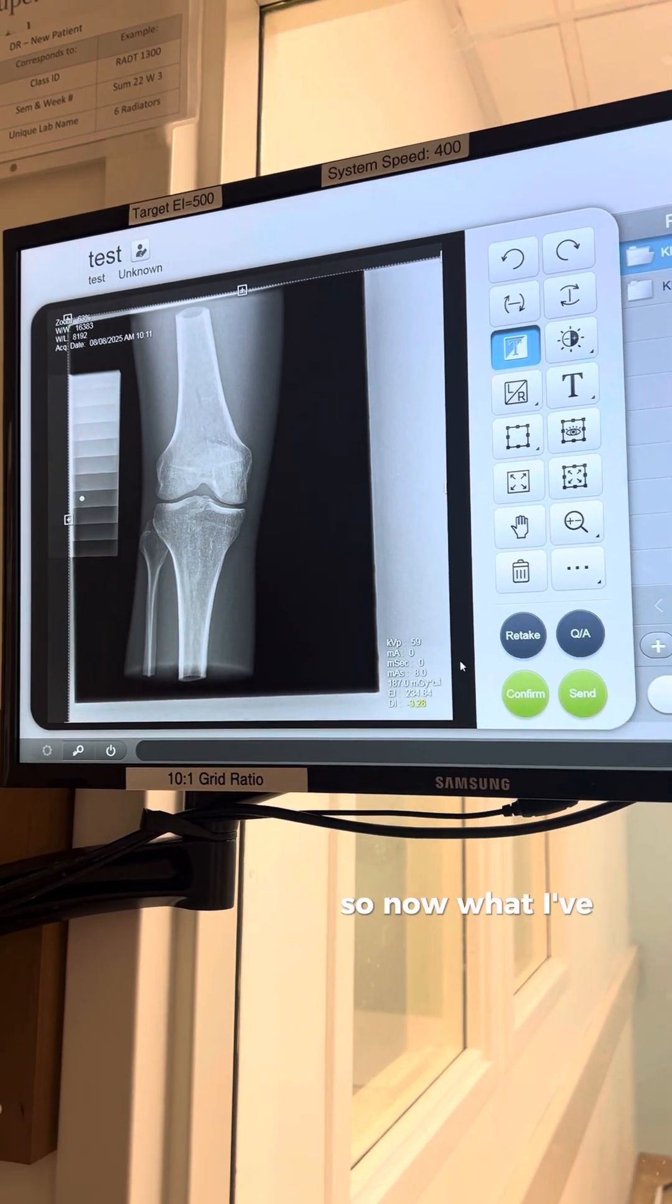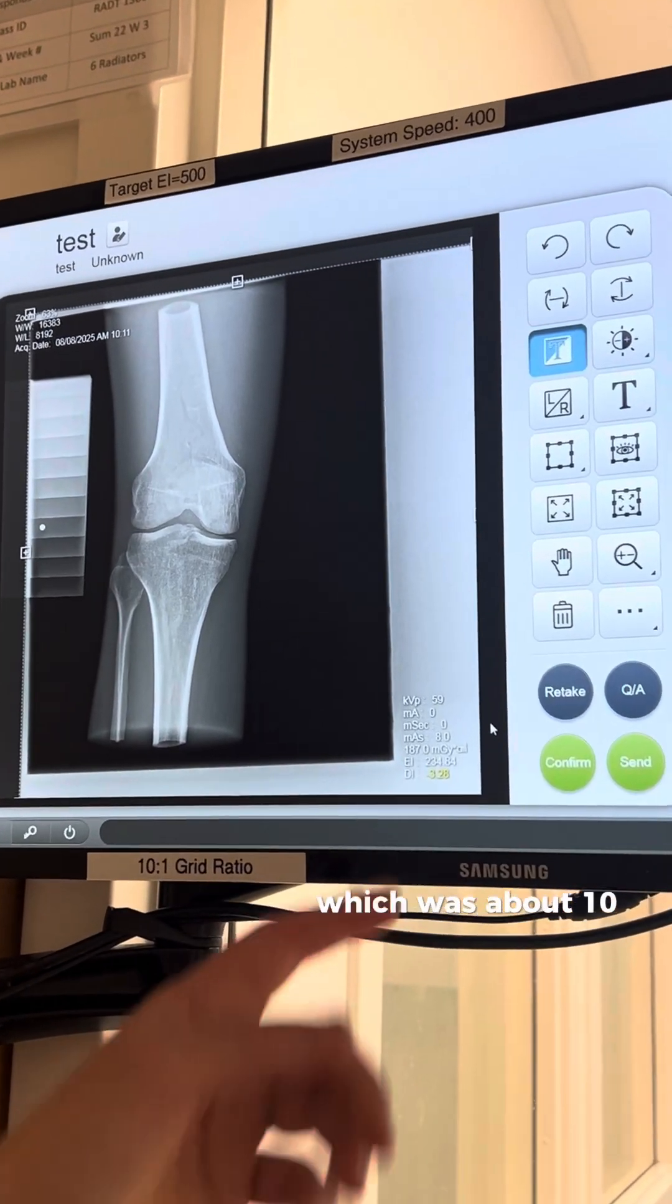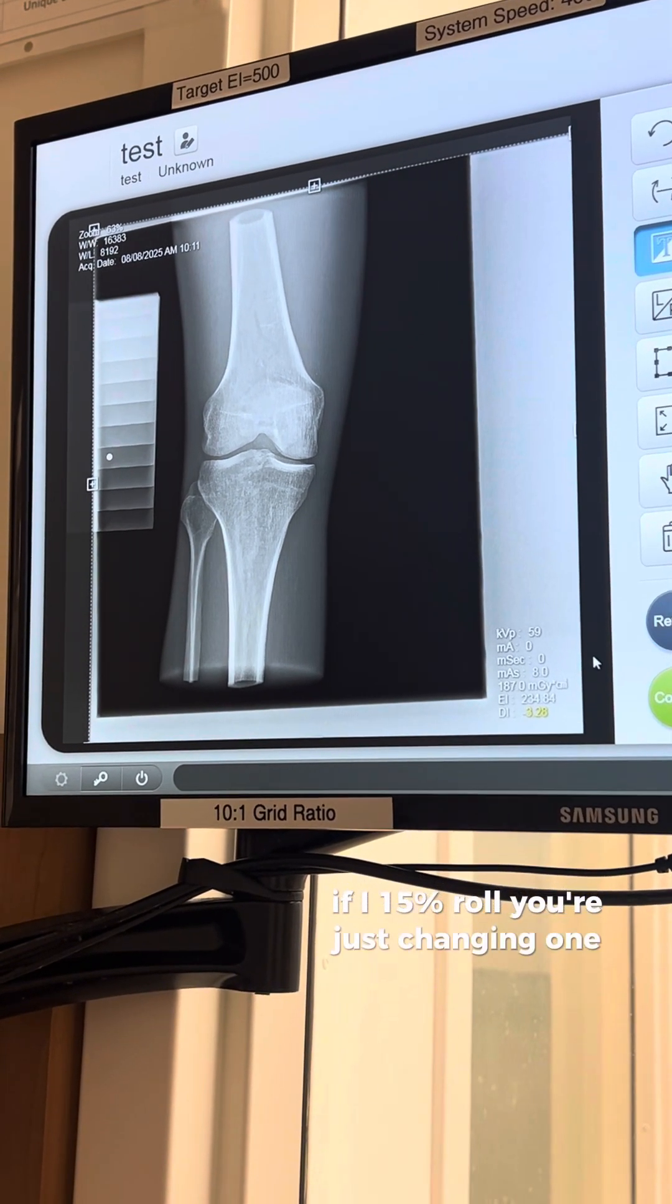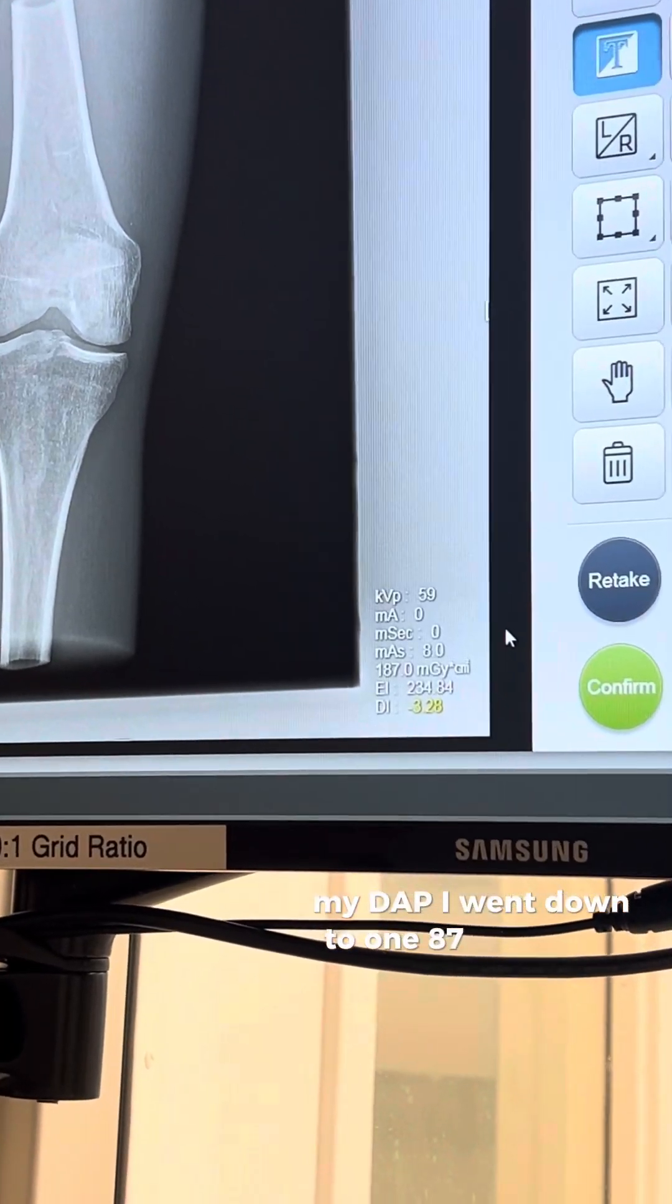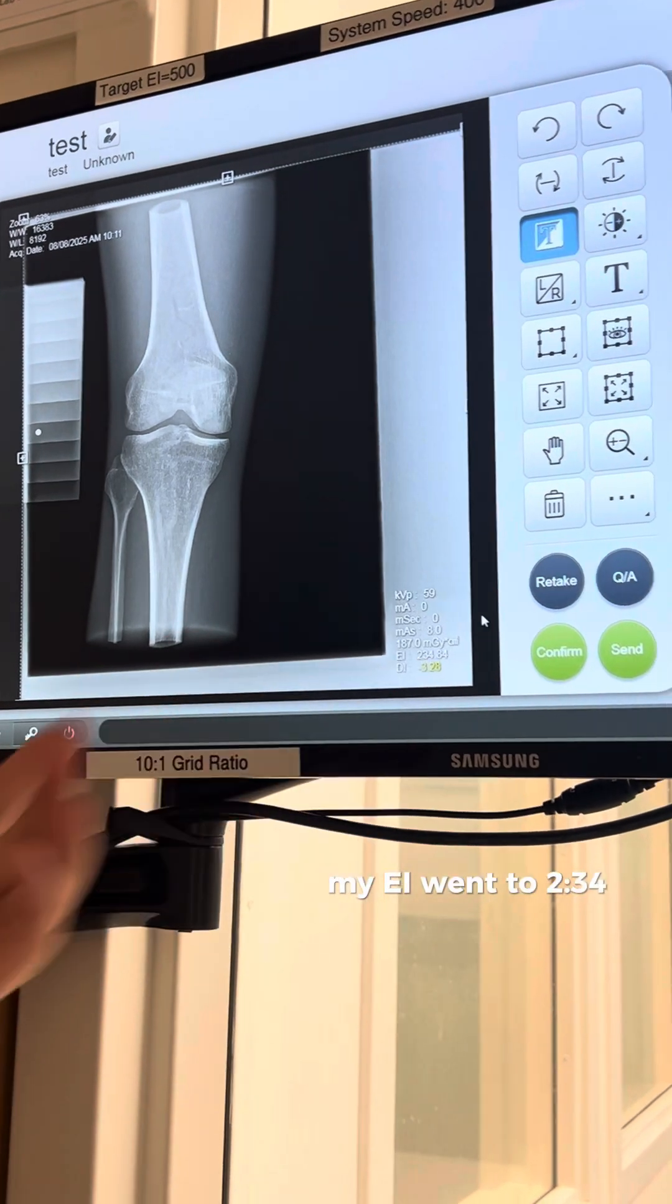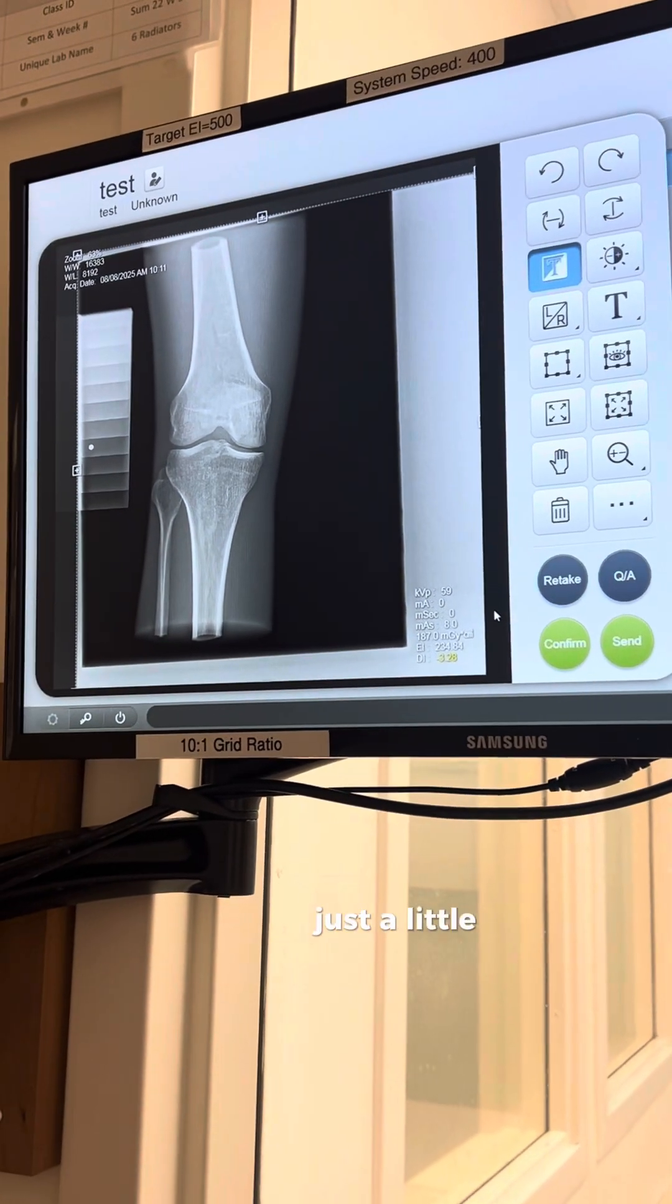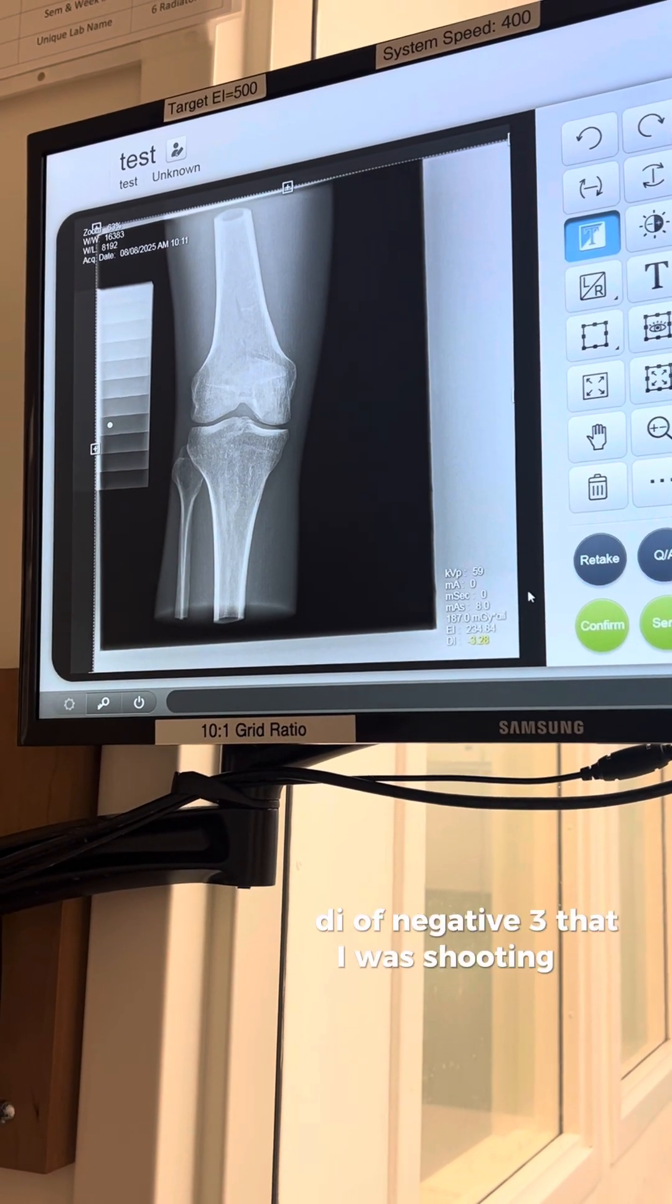So now what I've done is I've brought my KVP down 15%, which was about 10-ish, so I brought it down to 59. My mass is now 8 still, but 15% rule, you're just changing one thing, right? Notice what happened to my dose, my DAP. I went down to 187 milligrades centimeter squared. My EI went to 234, remember I said I was going to go to about 250, which brought our DI to a negative 3.28, just a little bit below that DI of negative 3 that I was shooting for.